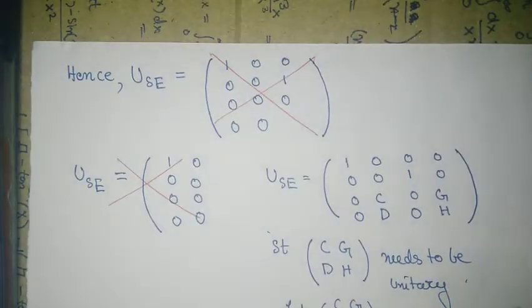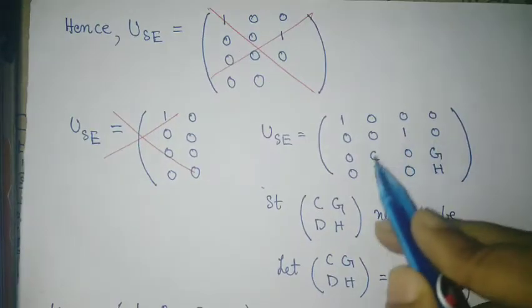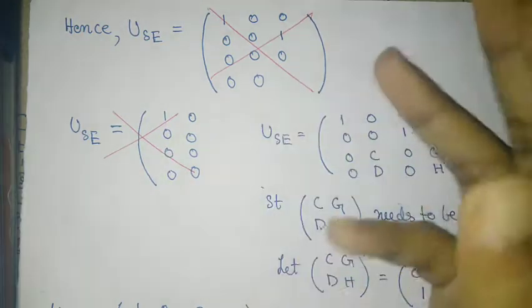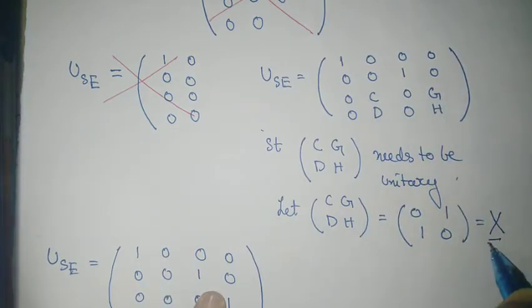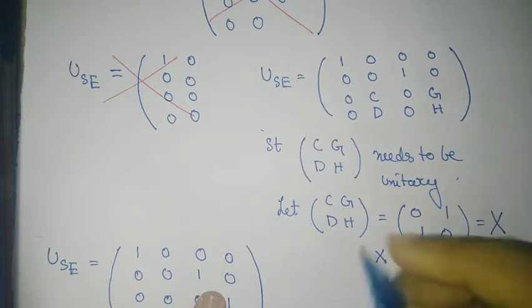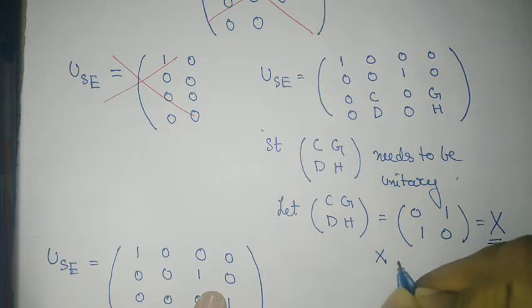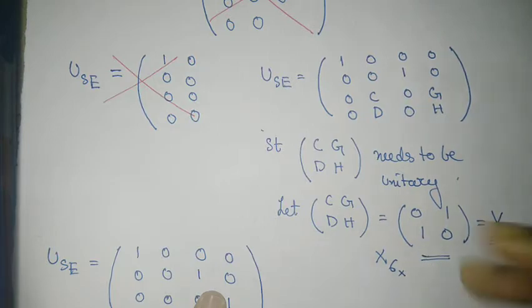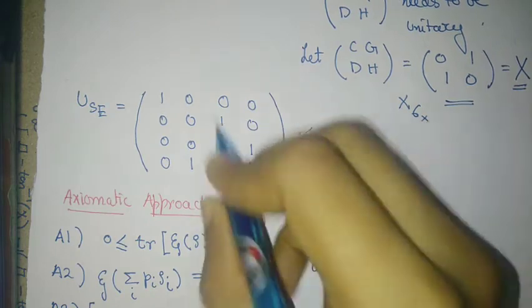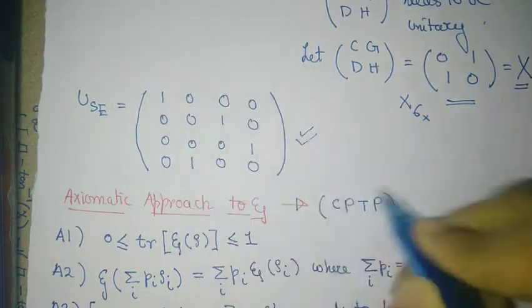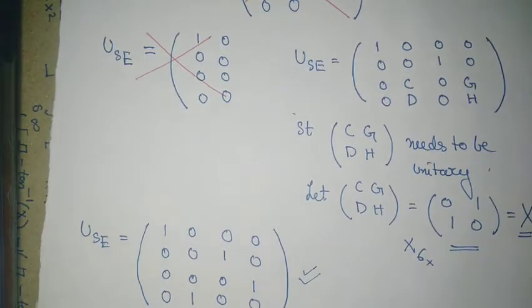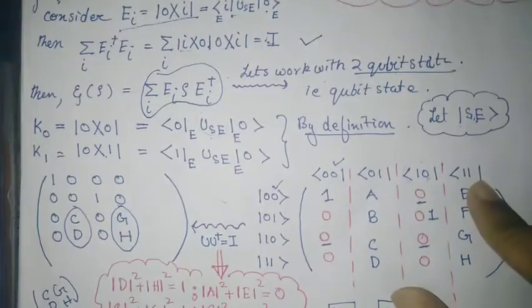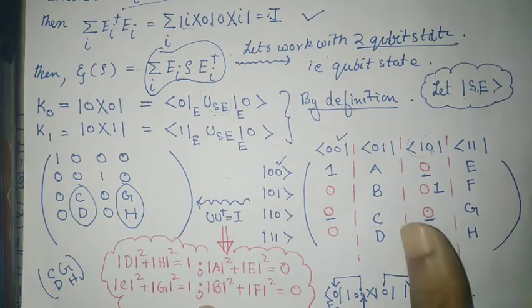The only remaining freedom lies in the 2×2 block {c, d, g, h}, which is the manifestation of the freedom in the Kraus operators. You can fix this unitary to be the X (bit-flip) operator, since σ_x is both unitary and Hermitian. Therefore the system-environment unitary that performs the eraser procedure is this specific matrix. This calculation is very important and comes up in many cases, although working directly with Kraus operators is often the better option.